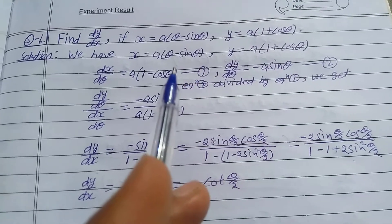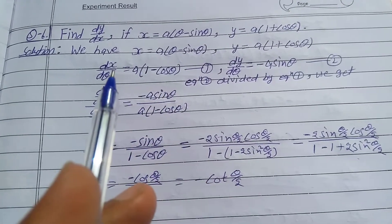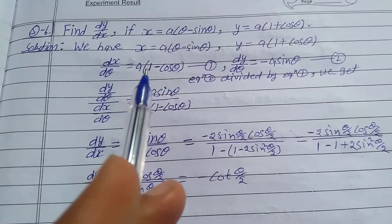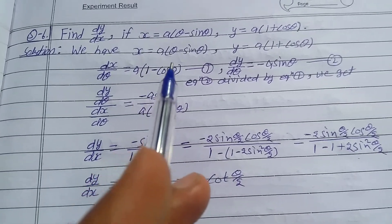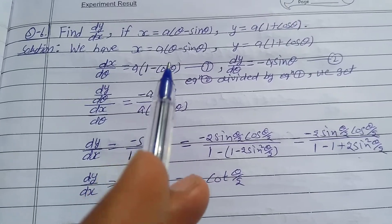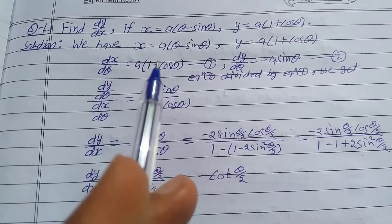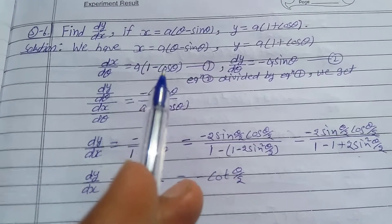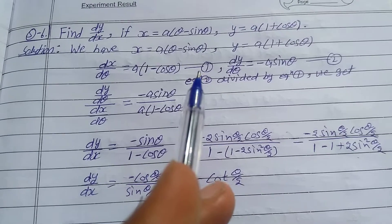Differentiate both functions with respect to θ. So dx/dθ = a times (1 - cosθ), since the derivative of θ is 1 and derivative of sinθ is cosθ. This is equation first.